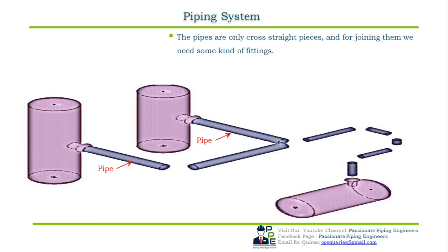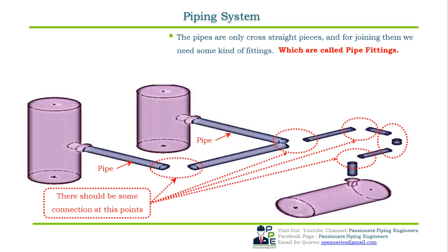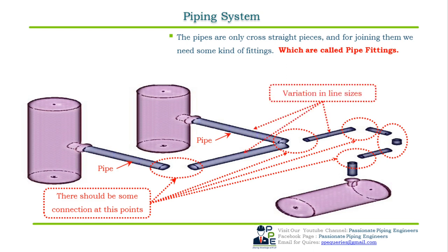In this condition, pipes cannot be joined on their own, and hence for joining them we need some kind of fitting, which are also called pipe fittings. We also observe that there is some variation in the line size — the lines are of different sizes. Always remember: when anyone in the piping industry says 'lines,' they mean pipes.